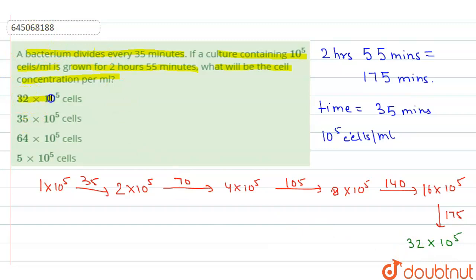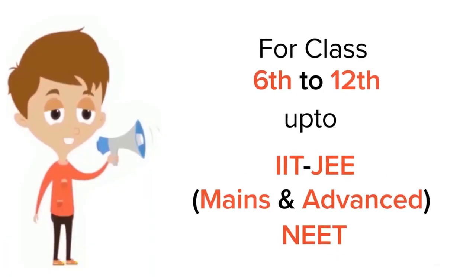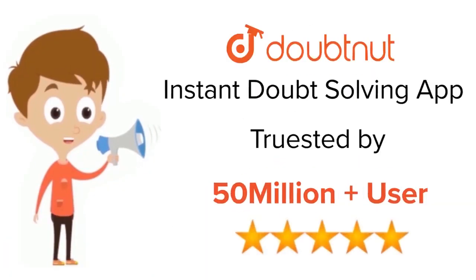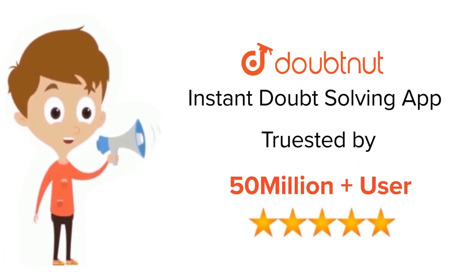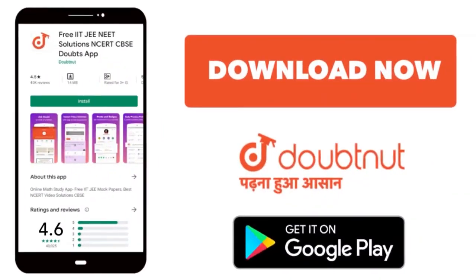Looking at the options, option number one — 32 × 10^5 cells per milliliter — is the correct answer. I hope I have solved the question. Thank you. For class 6 to 12, IIT JEE, and NEET level, trusted by more than 5 crore students — download the DoubtNut app today.